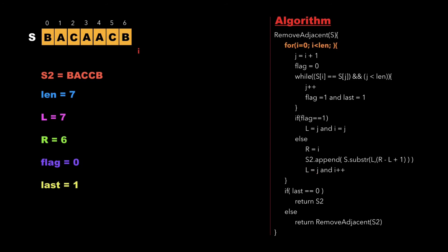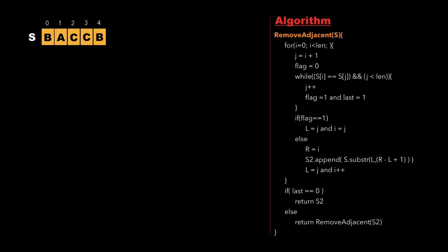Now i points to location 7 which is not less than length, so we exit the for loop. We check whether last equals 0. Since last is 1, we are in the else part where we again call the recursive function remove adjacent with the new string s2, which is 'baccb'.